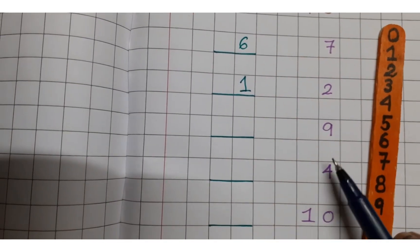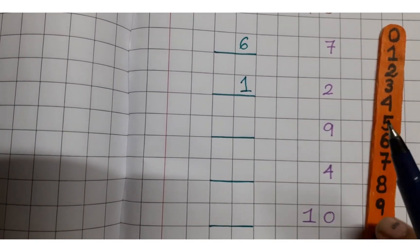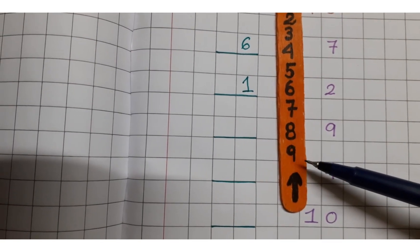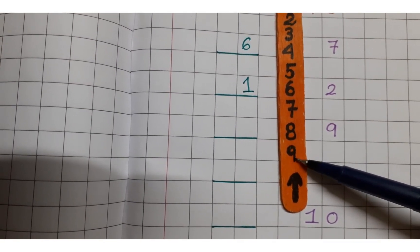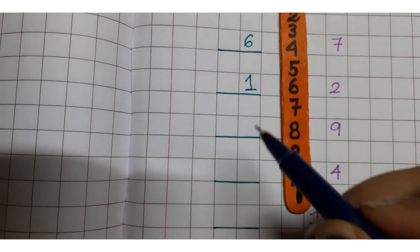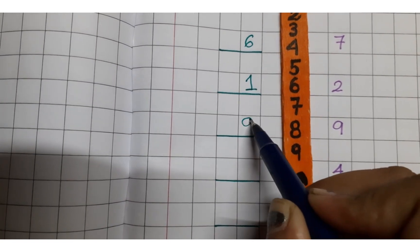Next one we have 9 here. Which number is before 9? Check the stick, yes 9 is here, on top of it, above this we have 8, so we have 8, so we will write 8 here.